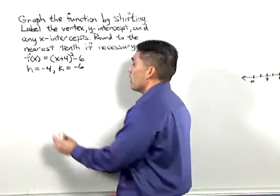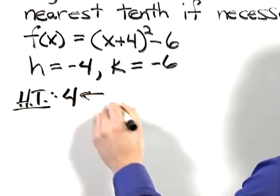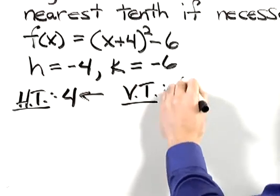So that implies that the horizontal translation is 4 units to the left, and the vertical translation is 6 units down.